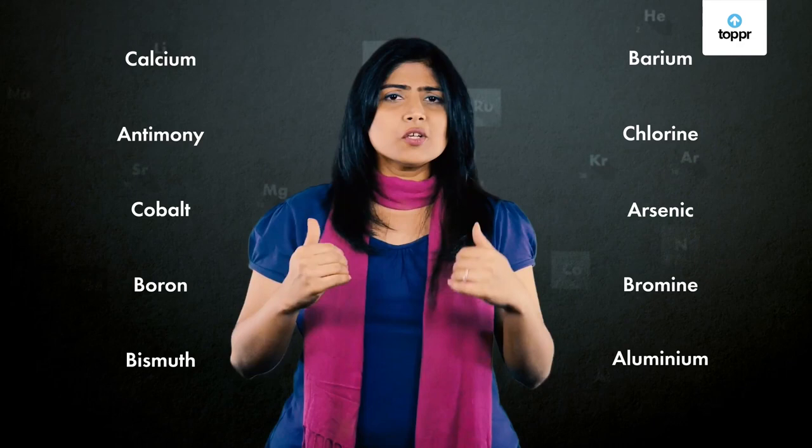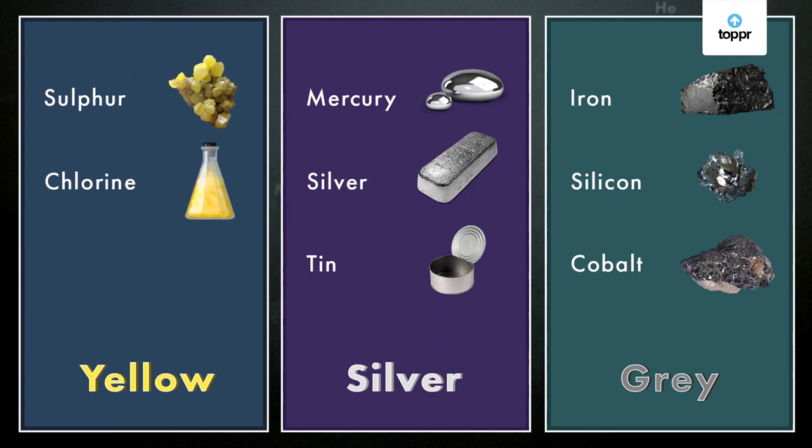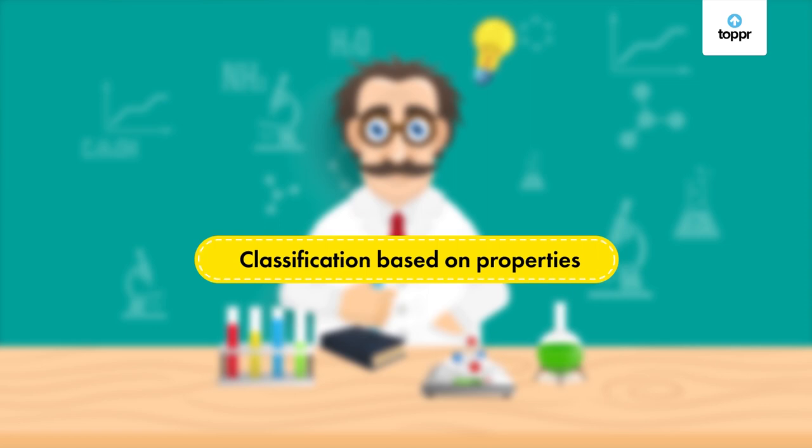It makes our life so much easier. Similarly, as scientists kept discovering various elements, they too wanted to arrange these elements in a proper order. So what kind of arrangement is possible for elements? Scientists thought of various possibilities and eventually concluded that elements should be arranged based on some of their properties.